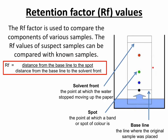The solvent then travels up through the chromatography paper. At the top, this is known as the solvent front — this is the point at which the water stopped moving up the paper, so you would stop the experiment just before the solvent reaches the very top. Finally, we have our spots — the point at which a band or spot of colour is found. So we have our baseline, our solvent front, and our spots. This allows us to calculate the RF value: RF equals the distance travelled by the substance divided by the distance travelled by the solvent.